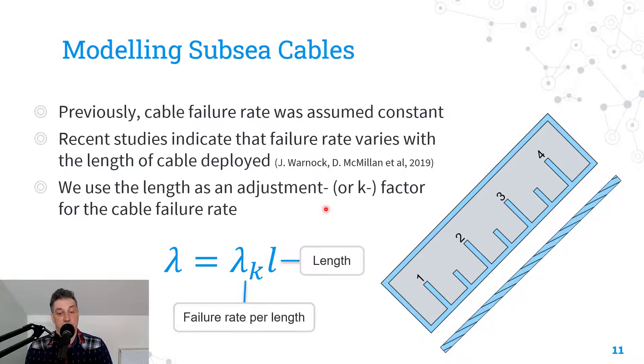But recent studies, particularly Warnock, McMillan et al. 2019, noticed that for a subsea cable, particularly in offshore wind applications, actually the failure rate varies depending on the length of cable deployed, which seems a more sensible model.